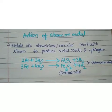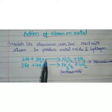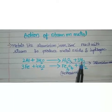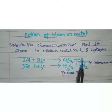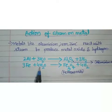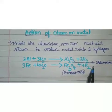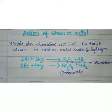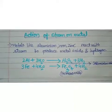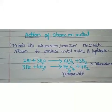Here are the reactions. Aluminum reacts with water to produce aluminum oxide (Al₂O₃) and hydrogen gas. When iron reacts with water it produces iron oxide and hydrogen gas. So this is the action of steam on metals, covering cold water, hot water, and steam reactions.